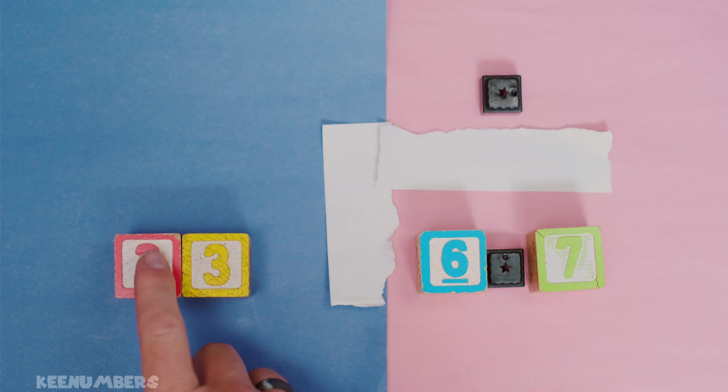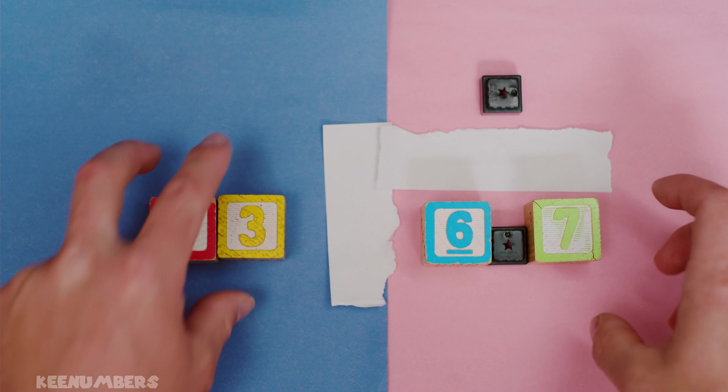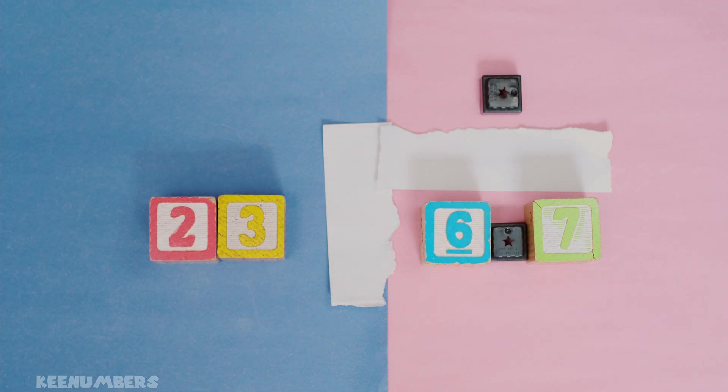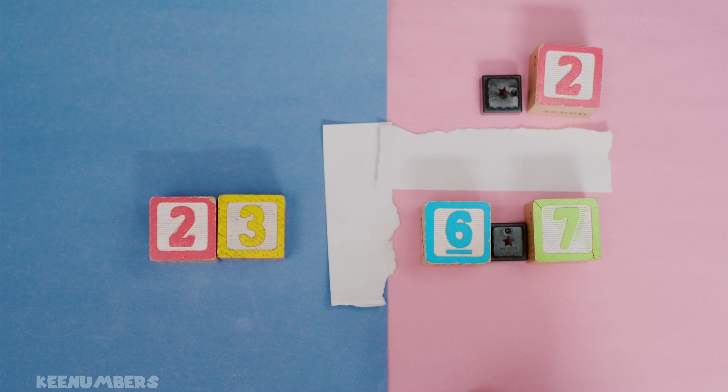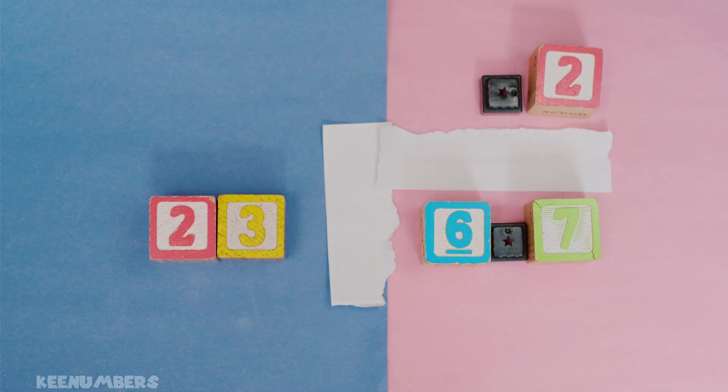23 goes into 67 - ignore that decimal for now - how many times? Not quite three times, it's just short. It's going to go in a whole whopping two times, technically 0.2. Multiply, carry out that multiplication, and you're going to get 46.